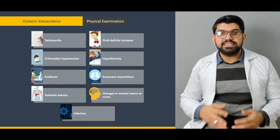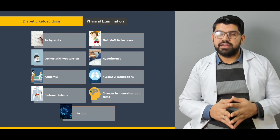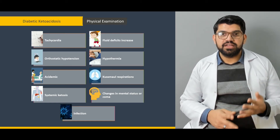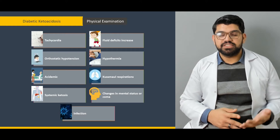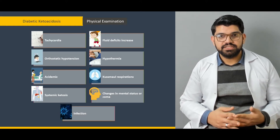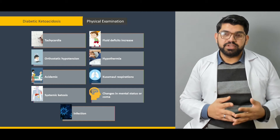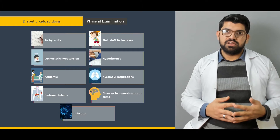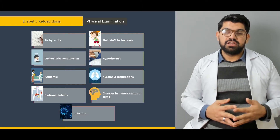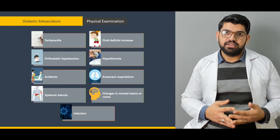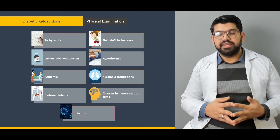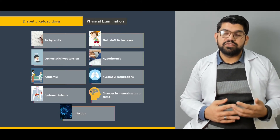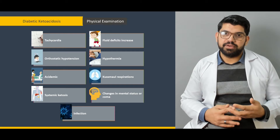What will be the examination findings in patients with diabetic ketoacidosis? What to look for — for example, tachycardia, fluid deficit, persistent hypertension, altered mental status. These should all be taken under consideration. What other features, for example Kussmaul respirations and fruity breath? These are all symptoms of diabetic ketoacidosis. So what will be the findings when you do physical examination in the patient with diabetic ketoacidosis?